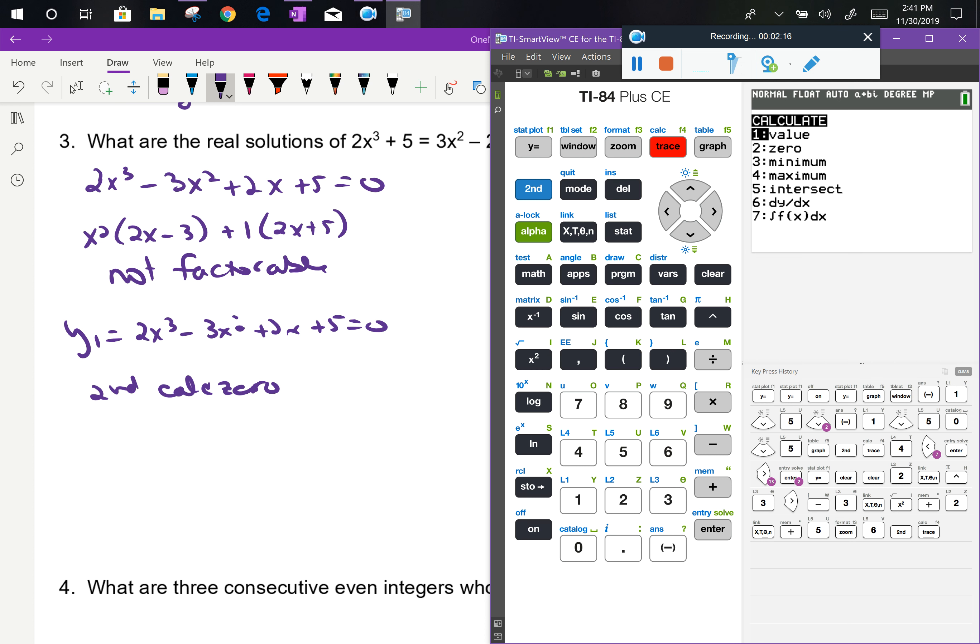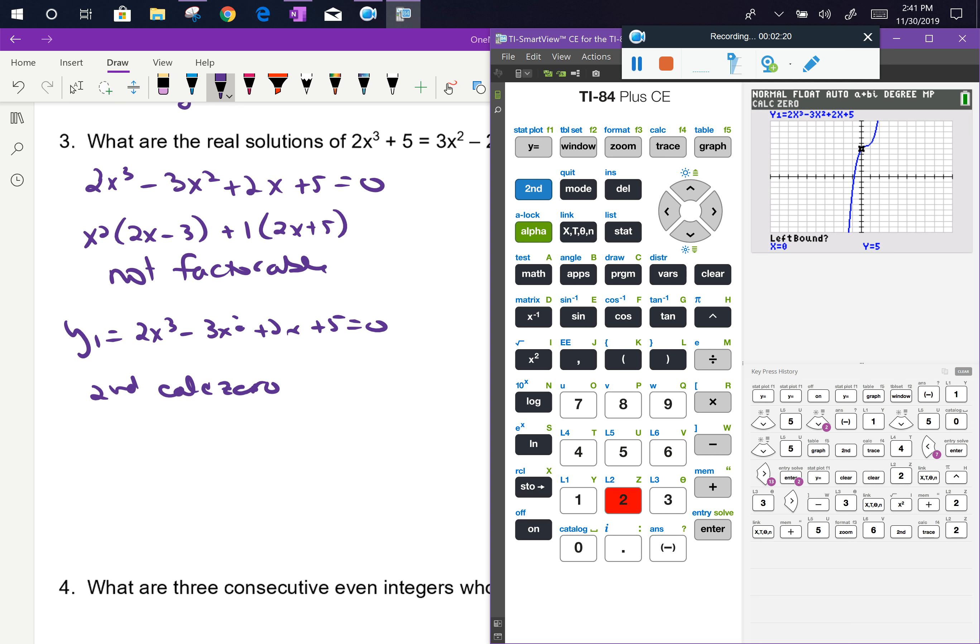So I'm going to do second calc zero, which is option number 2. And I've got to do my left bound and right bound. So I'll go to the left of that x-intercept, and then to the right of that x-intercept. And I don't really care about guessing, so I do an extra enter.